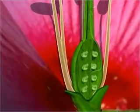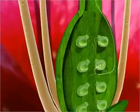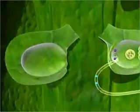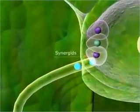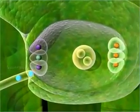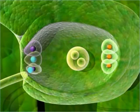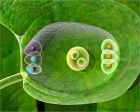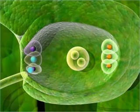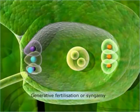After the pollen tube enters the ovule, it discharges the two male gametes it carries into the synergids of the embryo sac. This causes the synergid cells to rupture, thus leading to the fusion of a male gamete with the egg nucleus or oosphere. Due to this fusion, a diploid zygote is formed, which gives rise to an embryo. This process is known as generative fertilization or syngamy.